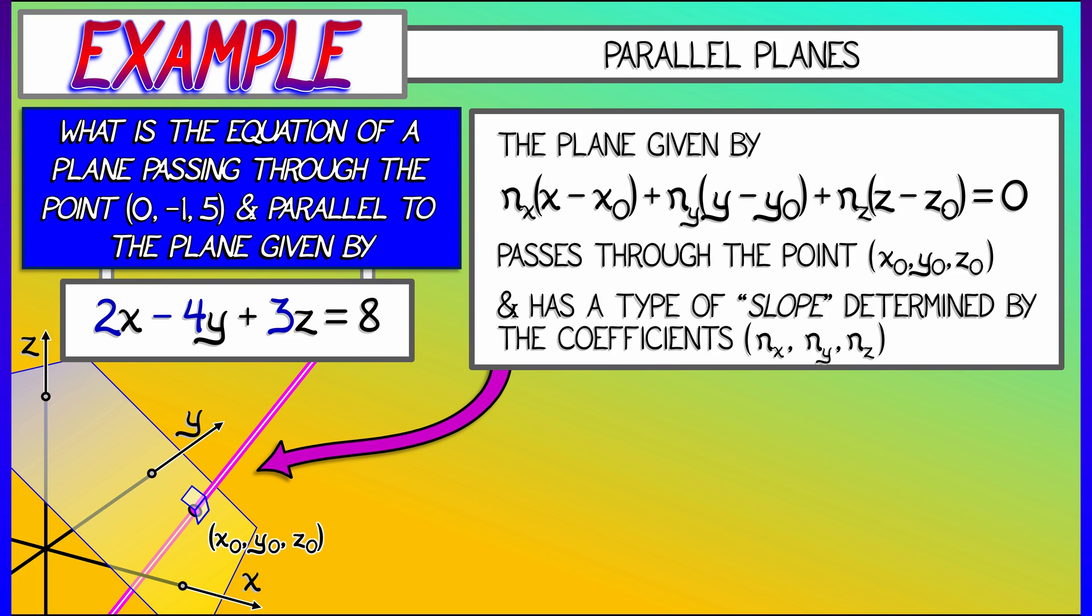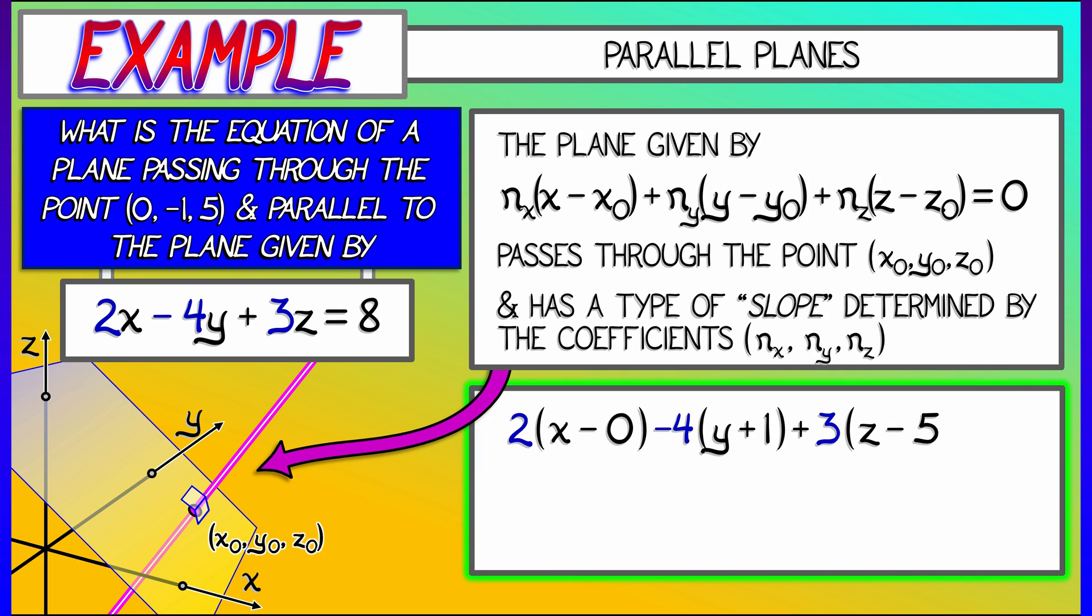So let's just plug this into the formula, the point-slope formula that we have just covered. And now when we do that, we get 2 times quantity x minus 0 minus 4 times quantity y minus negative 1 plus 3 times quantity z minus 5. Set all that equal to 0.